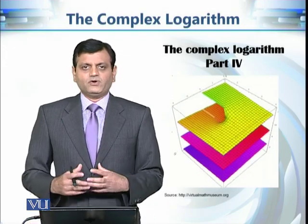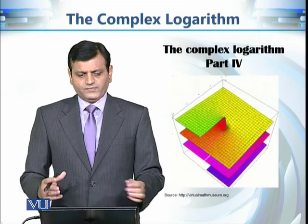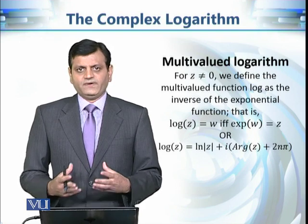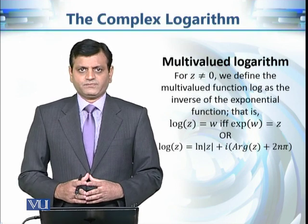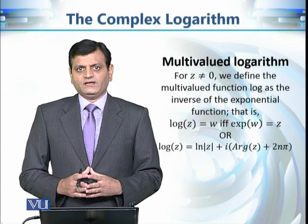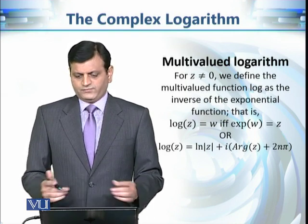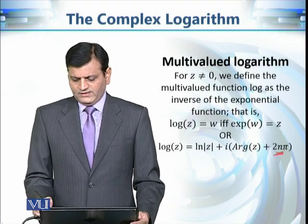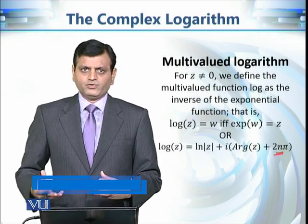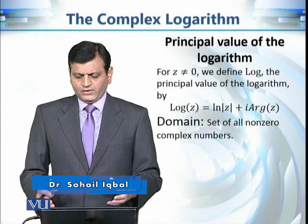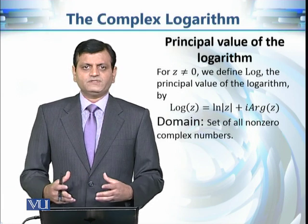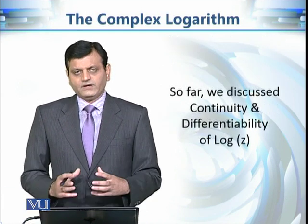This is the fourth part of our discussion on the complex logarithm. So far we have defined this multivalued function using the fact that it is the inverse of the exponential function. Since the exponential function is not one-to-one, its inverse is not a single-valued function — it is a multivalued function, where n is any integer. When n equals zero, it gives us the principal value of the logarithm, or the principal branch.